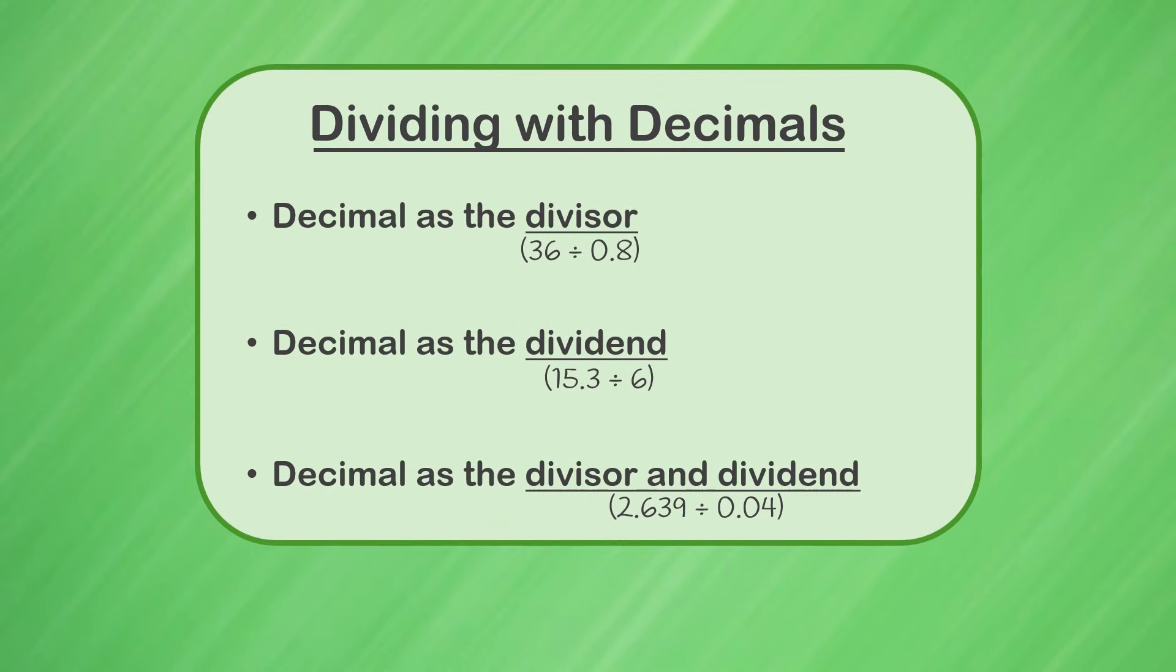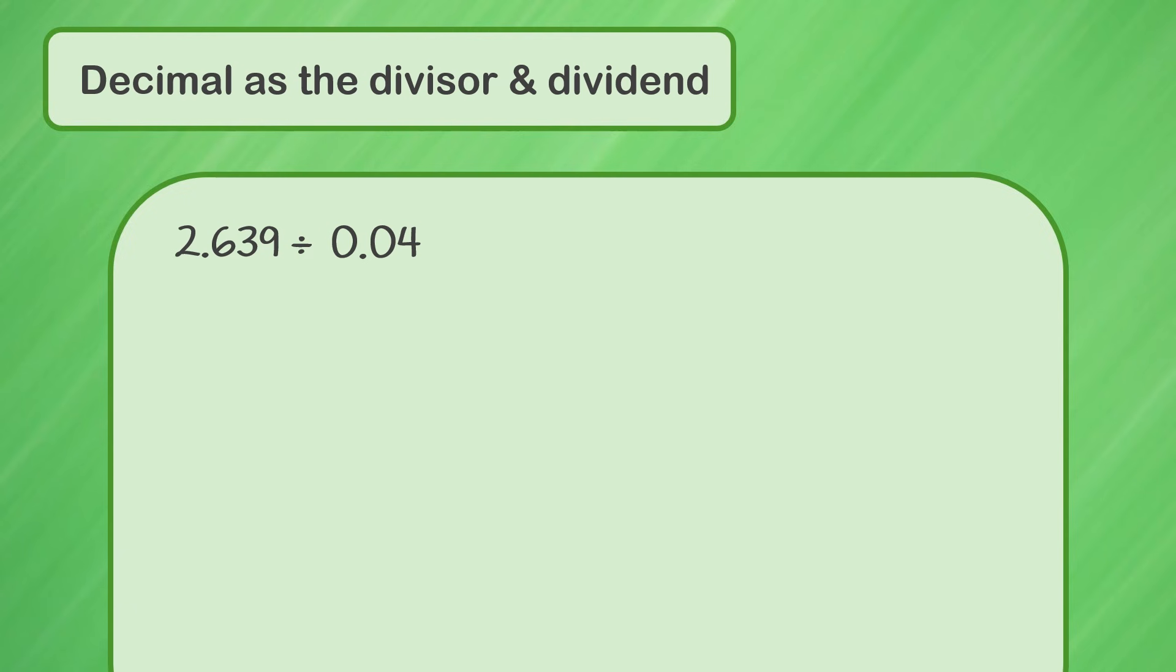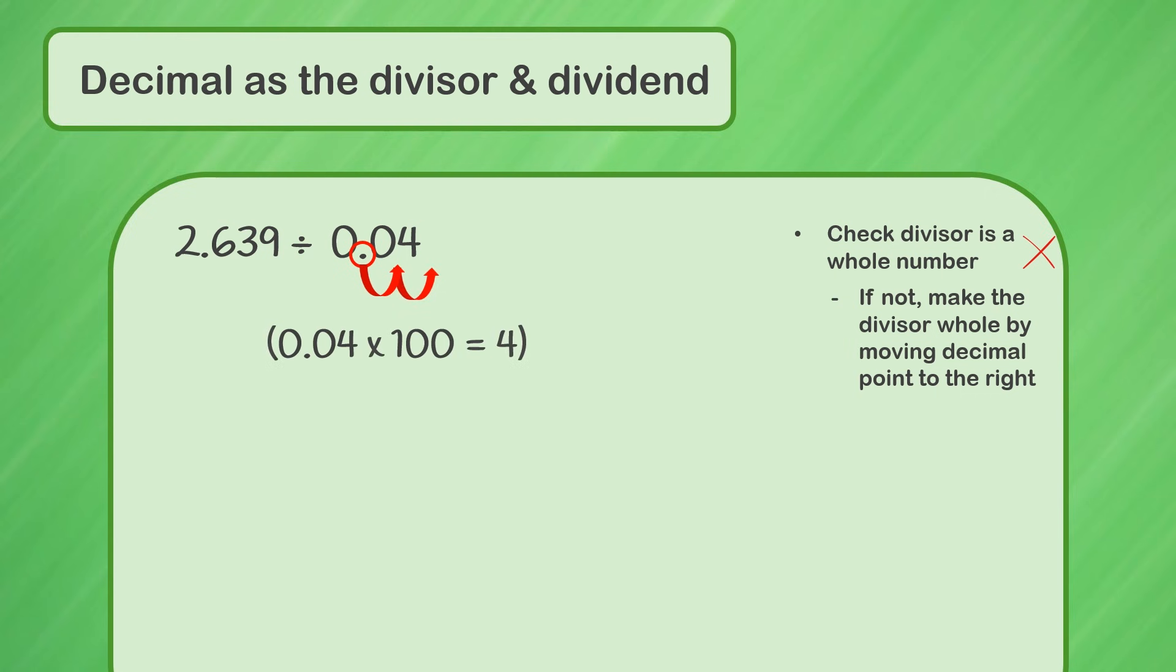Now let's move on to a problem where both the divisor and the dividend are decimals. Here's the question. Do you remember our first step? That's right. We've got to check to make sure our divisor is a whole number. Our divisor is 4 hundredths. That's not a whole number. We need to change it so it is a whole number. If we move the decimal point two places to the right, that is, we multiply 4 hundredths by 100, we will get a whole number, 4.